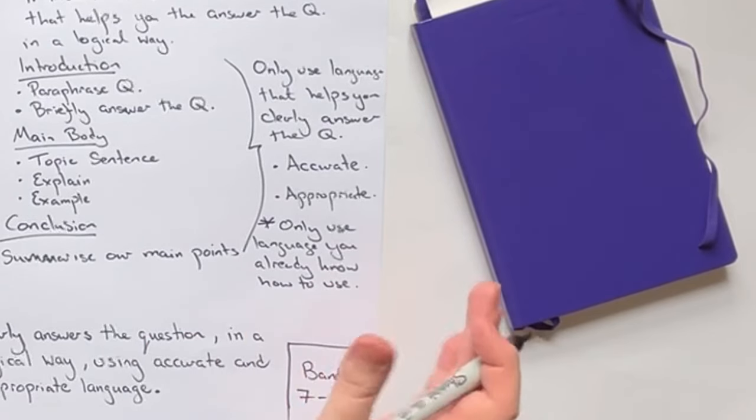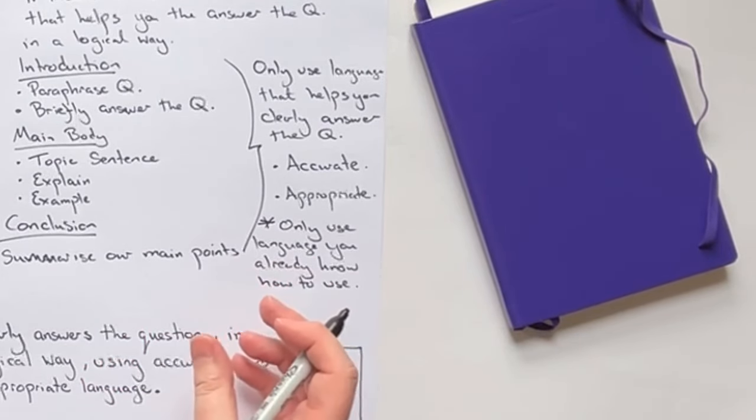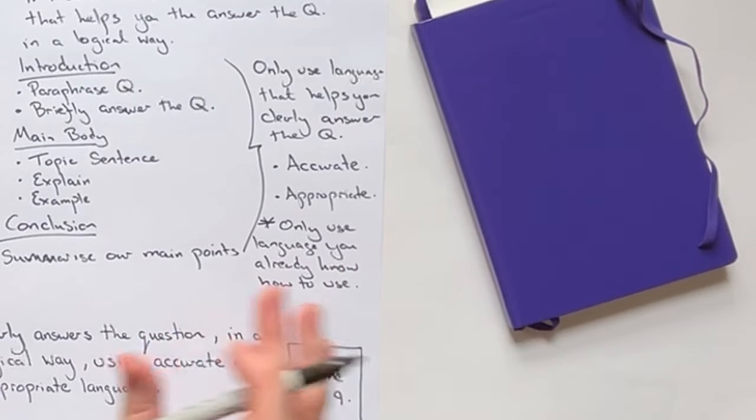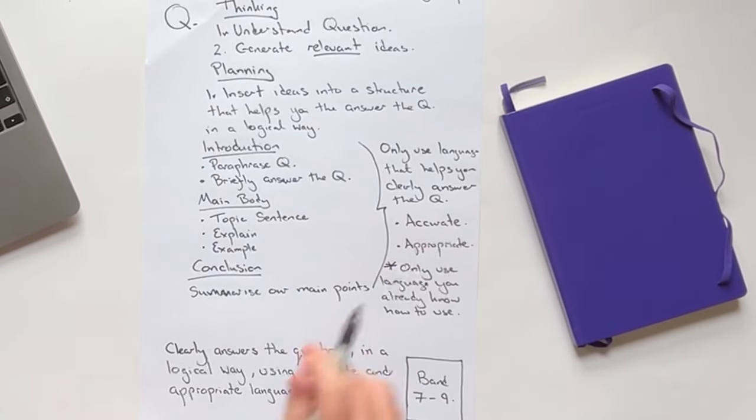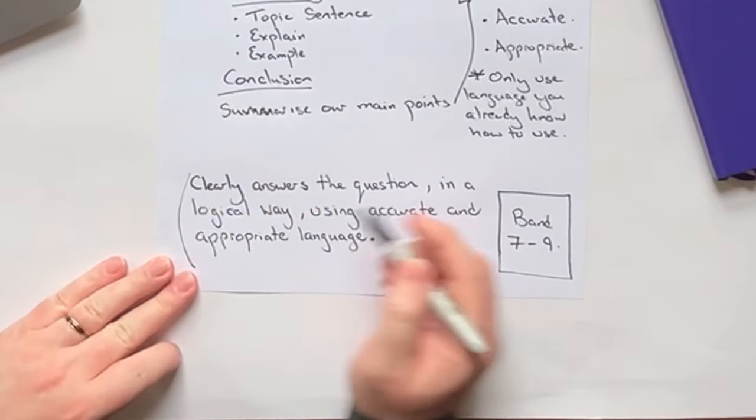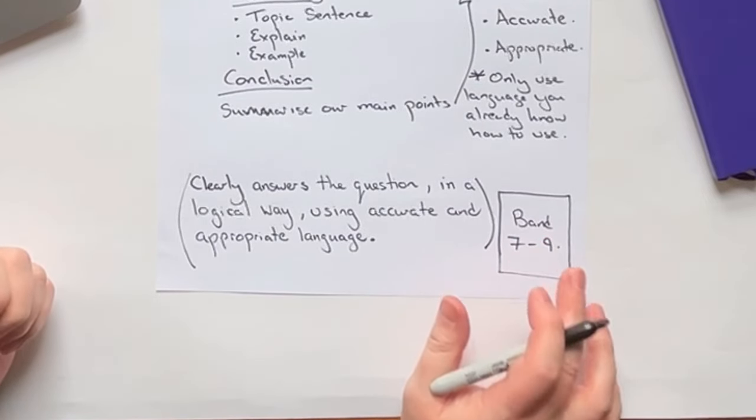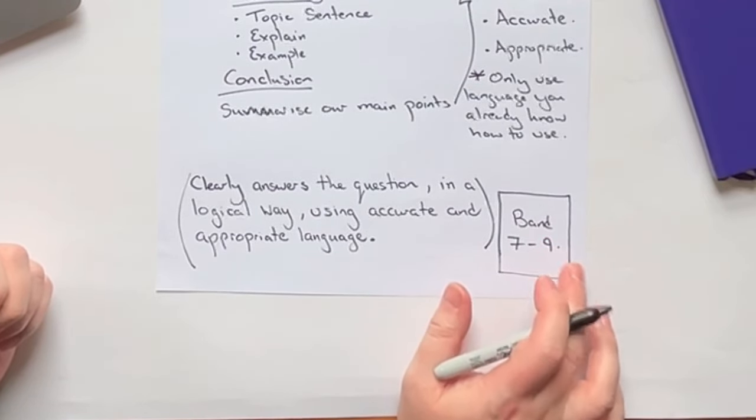And just to emphasize that only use language you already know how to use. If you have a choice between using a simpler word that you fully understand and is going to be accurate and appropriate, or using a more high level word or structure or grammatical structure that you're not sure about, use the simpler one because it is going to help you clearly answer the question in a logical way using accurate and appropriate language. If all you do is that, you're dramatically increasing your chances of getting a 7, 8 or even 9.